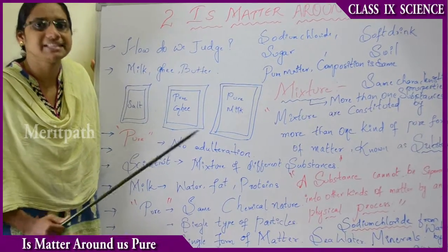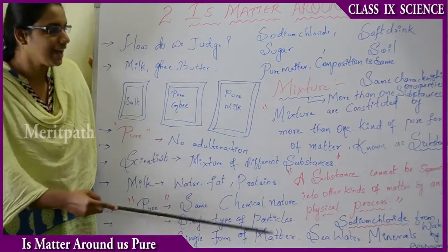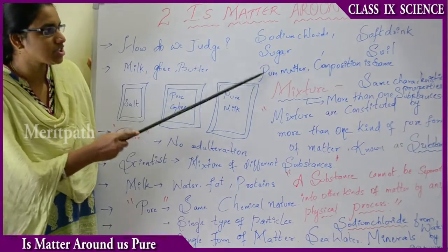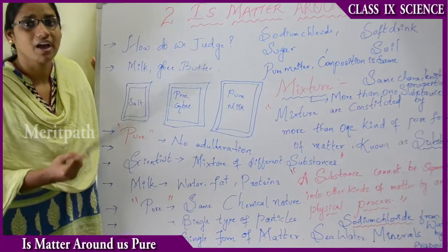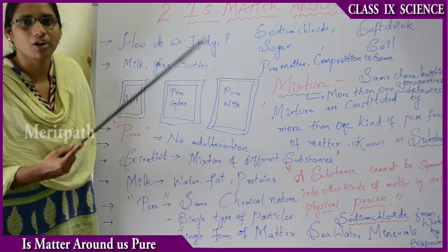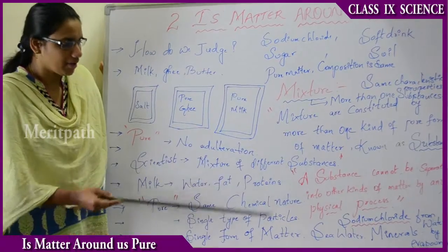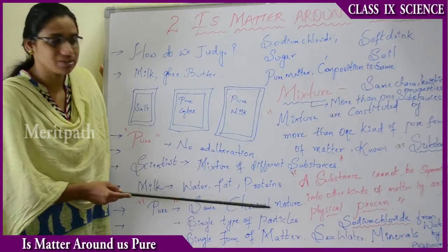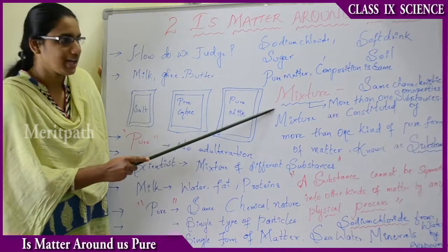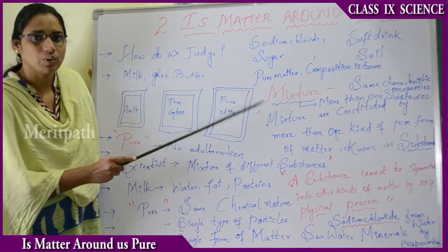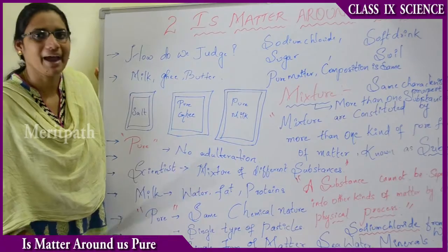Sodium chloride and sugar are basic substances that cannot be divided further. Soft drink, for example, is a mixture of sugar, water, and other substances. A mixture has two or more substances, while a substance is a single basic form of matter.